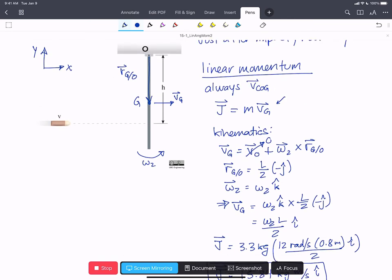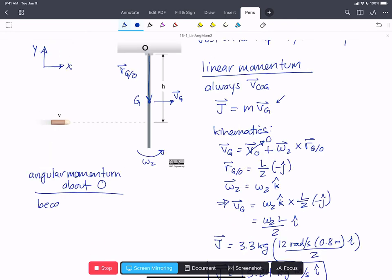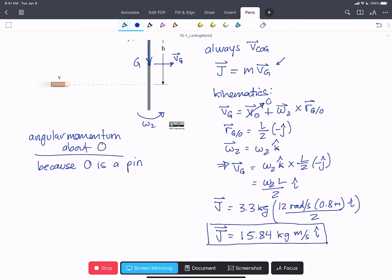We've been also asked to find the angular momentum. Now, much like moments, we have to specify where we're taking the angular momentum, and it is about O, the pin. Because O is a pin, we can use the simplified expression.